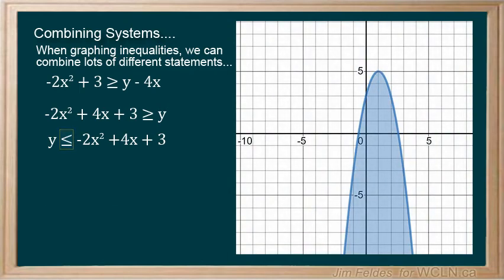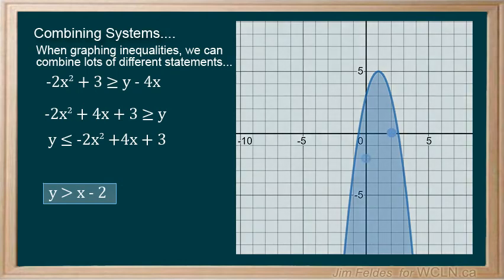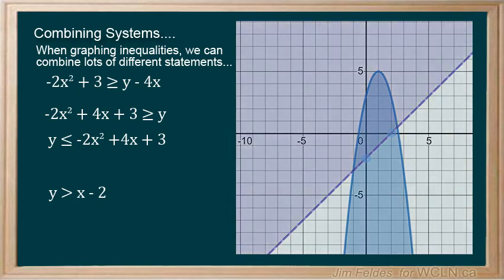We'll add the linear inequality y is greater than x minus 2. This can be drawn quickly using the intercepts 2, 0 and 0, 2. Greater than lets us know to use a dashed line and shade above.